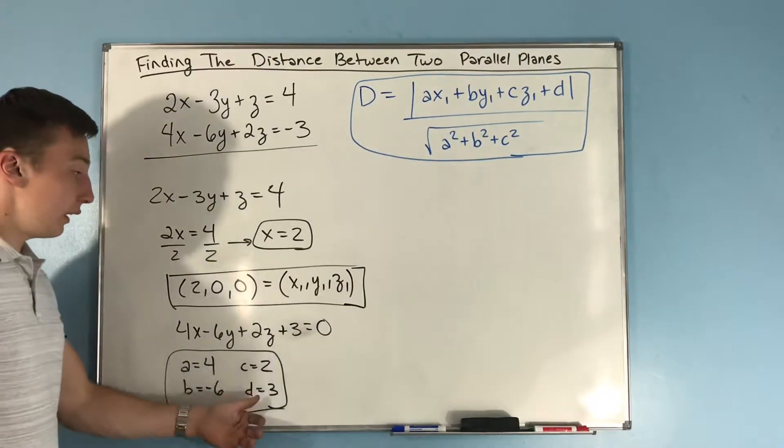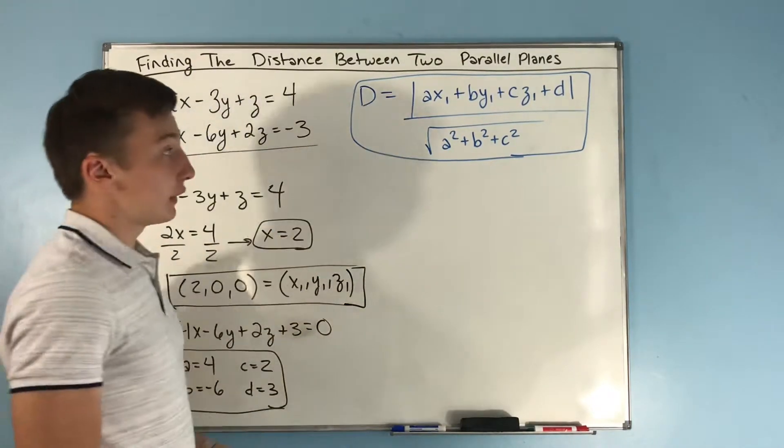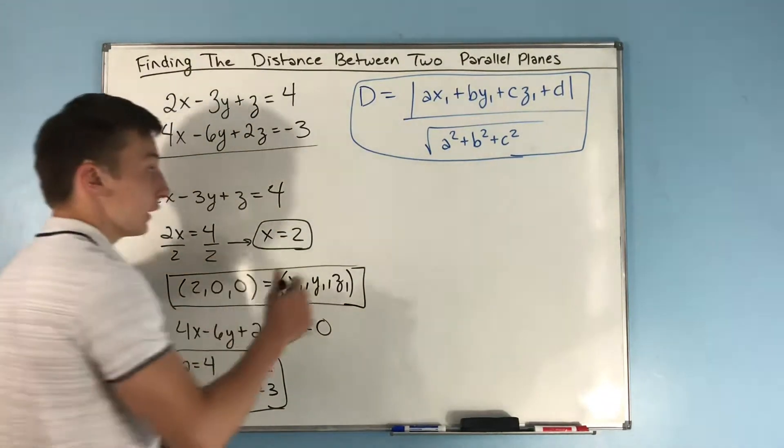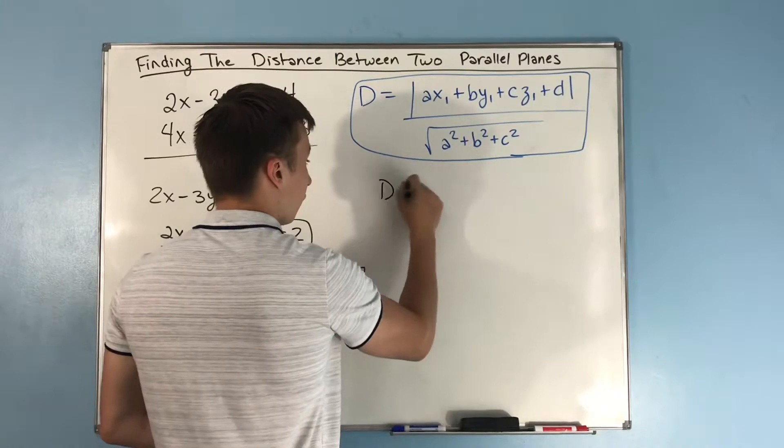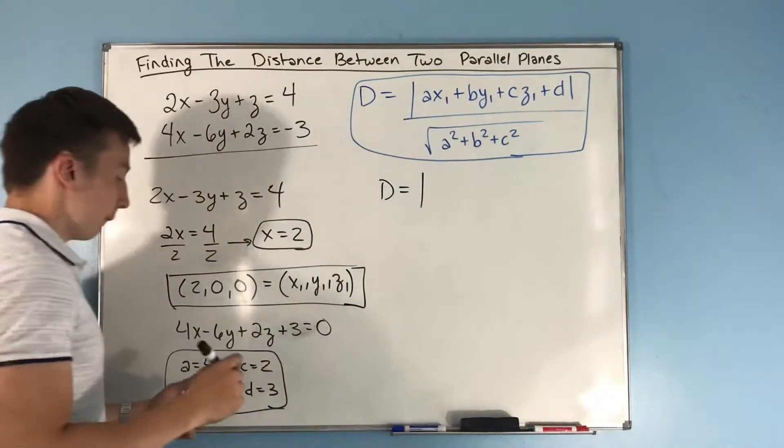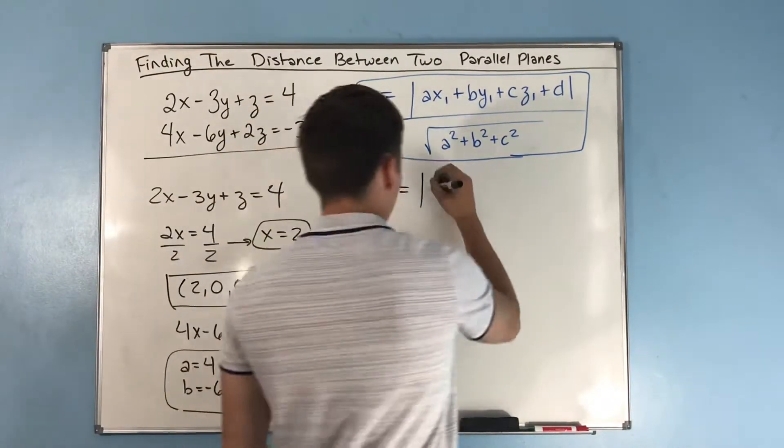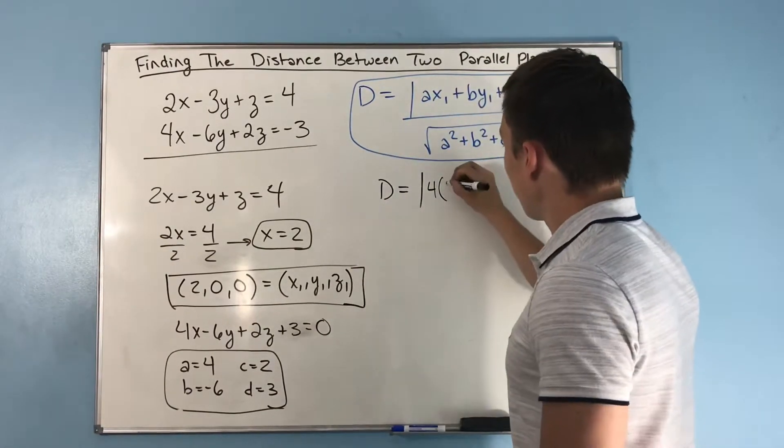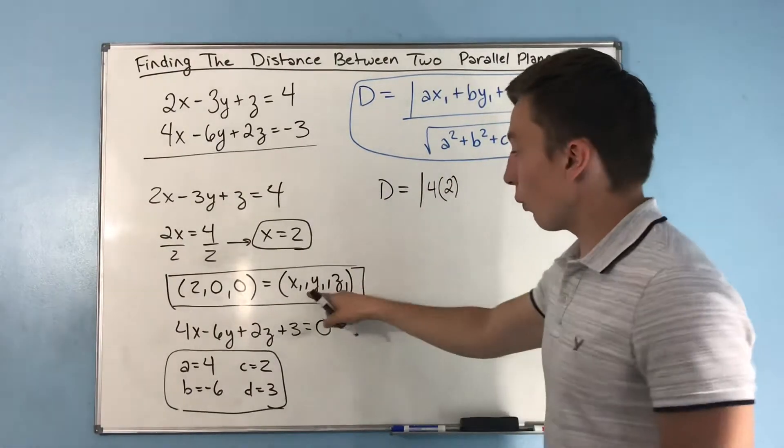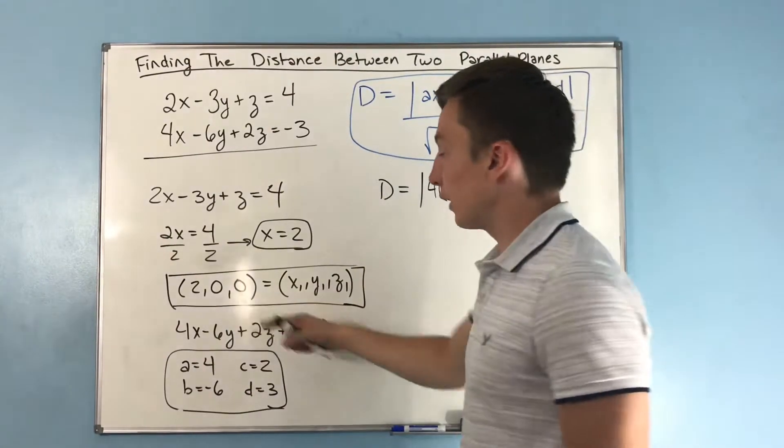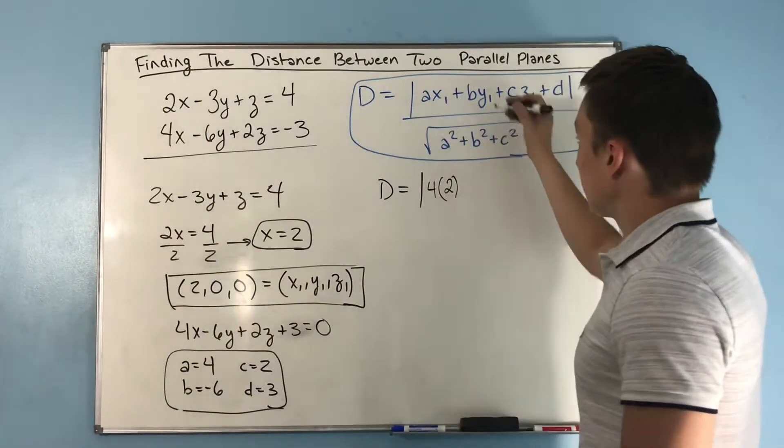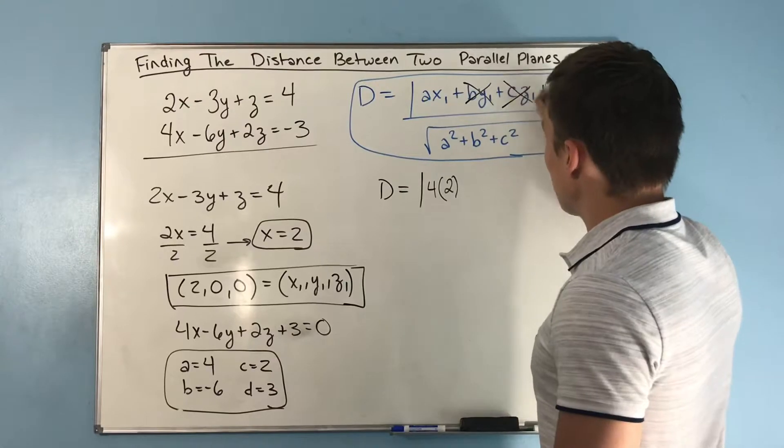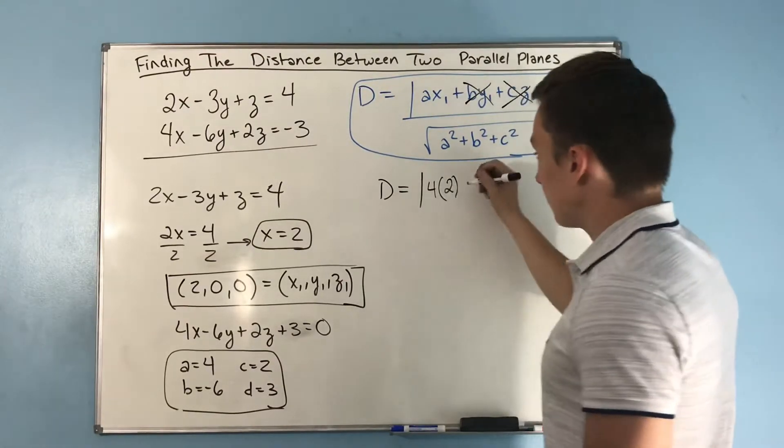Now that we have a, b, c, and d, and we have x1, y1, and z1, we can just plug into the distance equation. The distance equals a times x1, which is 4 times 2. What's really nice is that y1 and z1 are both 0, so those terms go away. We just have plus d, which is 3.